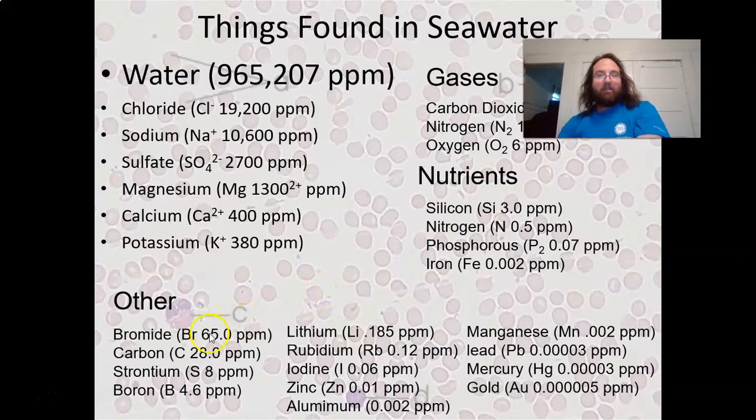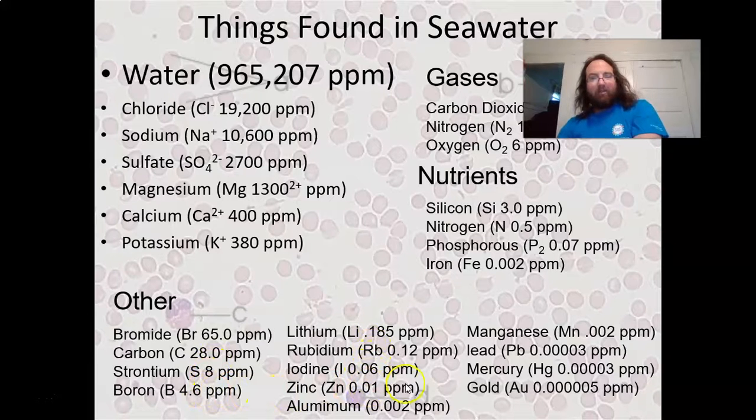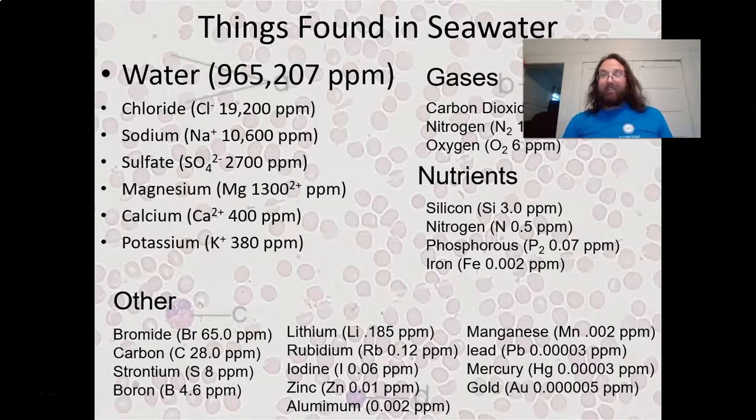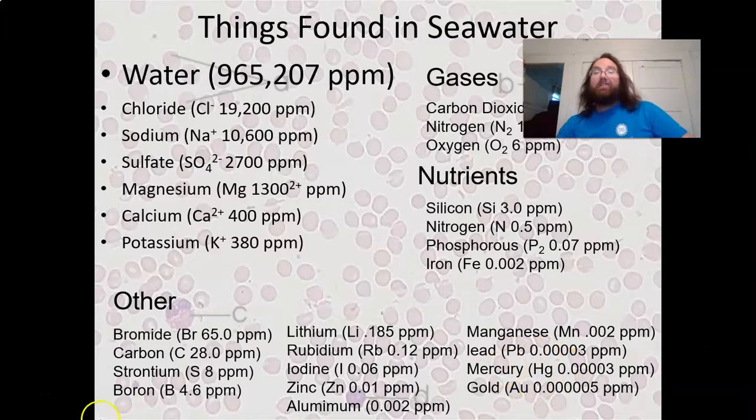We also have things like bromide, carbon, strontium, boron, iodine, zinc, aluminum. You can even find at about a few parts per trillion of gold. So if you go through a trillion gallons of seawater, you can find one gallon of gold. Do you realize how big a trillion is? Honestly, the people in the finance sector are a lot better understanding that, but yeah, it's a lot.